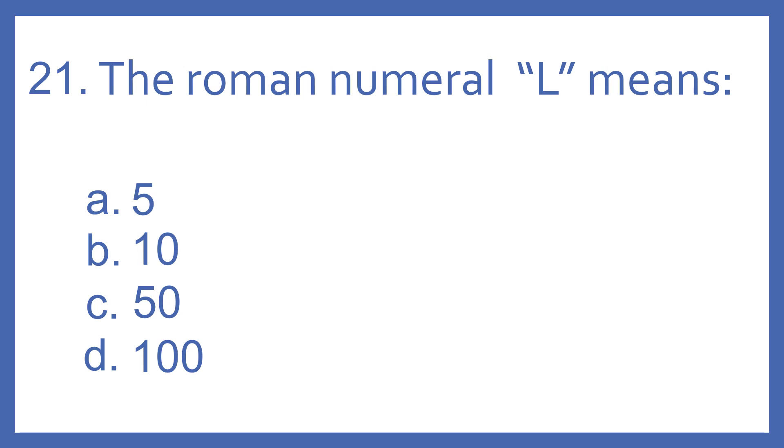Number 21, the Roman numeral L means A, 5. B, 10. C, 50. Or D, 100. And the answer is C, 50. The Roman numeral L means 50. 5 in Roman numeral is V, 10 is X, and 100 is C. And just an easy way to remember 100, there are 100 years in a century. Which century starts with a C.